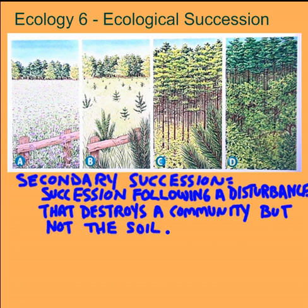In secondary succession you have an ecosystem that gets disturbed and it takes a few steps back. That could be a natural disturbance or a man-made disturbance like in this case. Natural disasters like a forest fire, a flash flood, a tsunami, or a landslide might all wipe out the community, but there would still be soil — so that would be secondary succession.